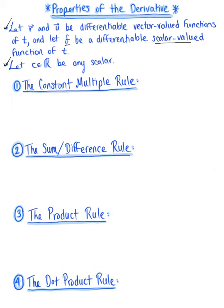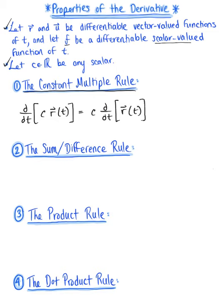These first few rules are going to be familiar. Number one is the constant multiple rule. If we are differentiating a scalar multiple of vector r of t with respect to t, we can pull that scalar c outside the derivative, giving us c multiplied by d/dt of r of t, which leaves us with c times vector r prime of t.